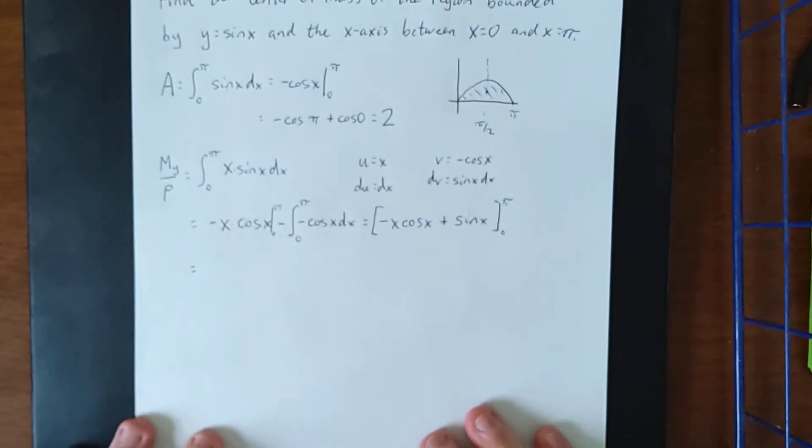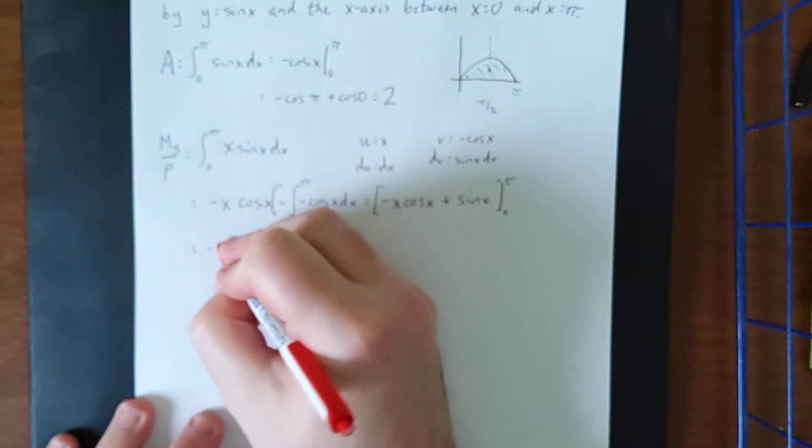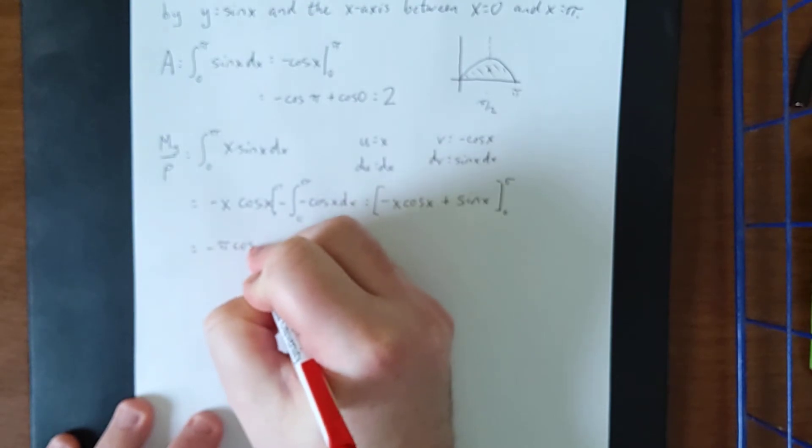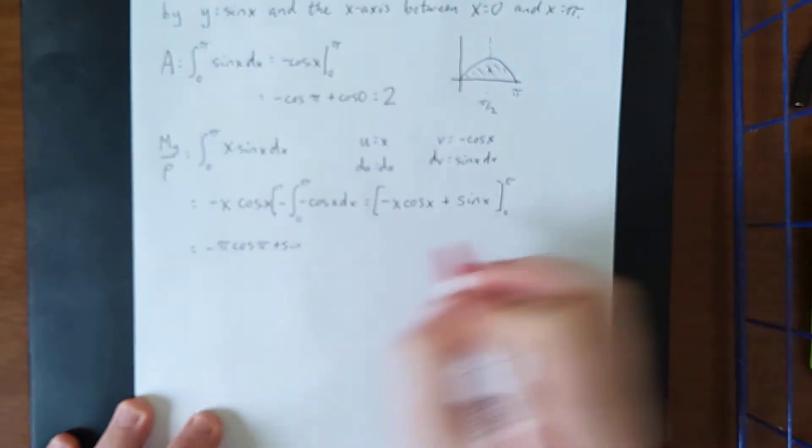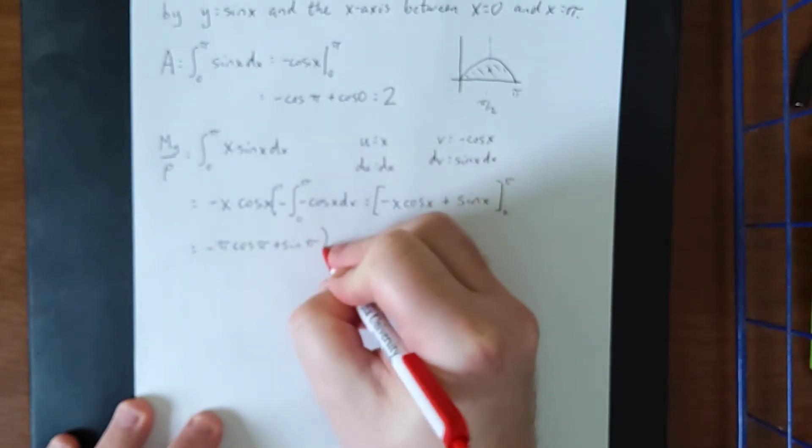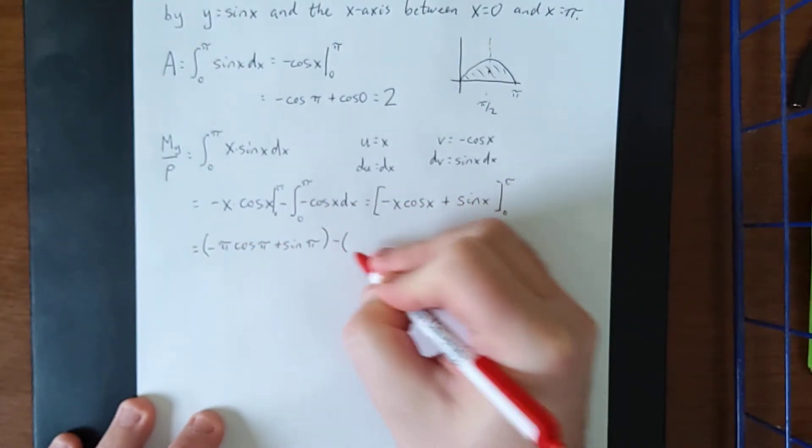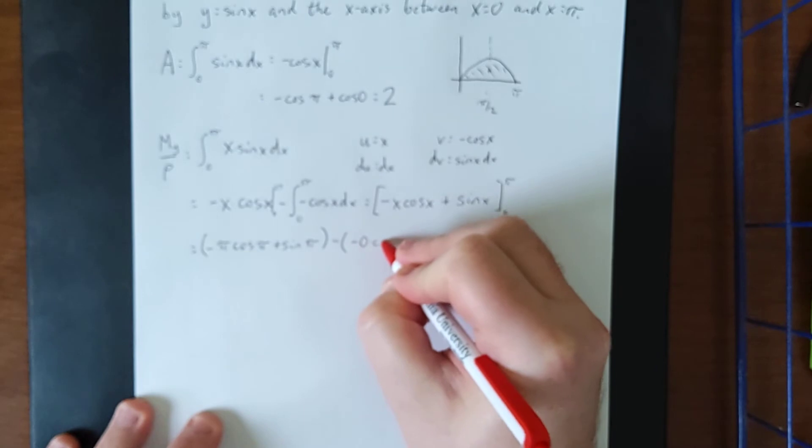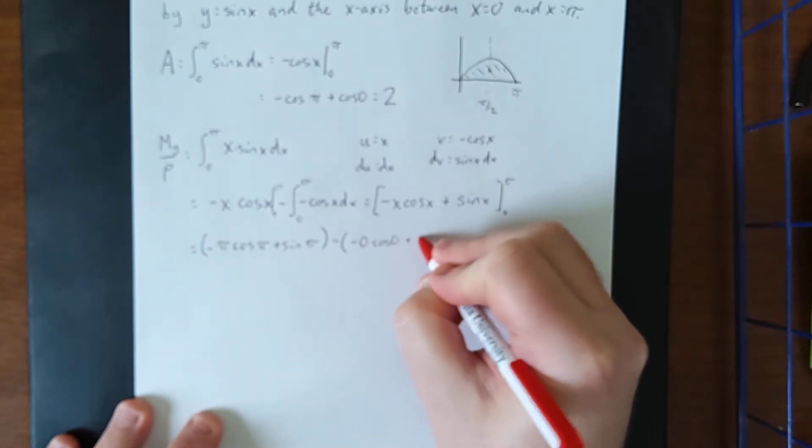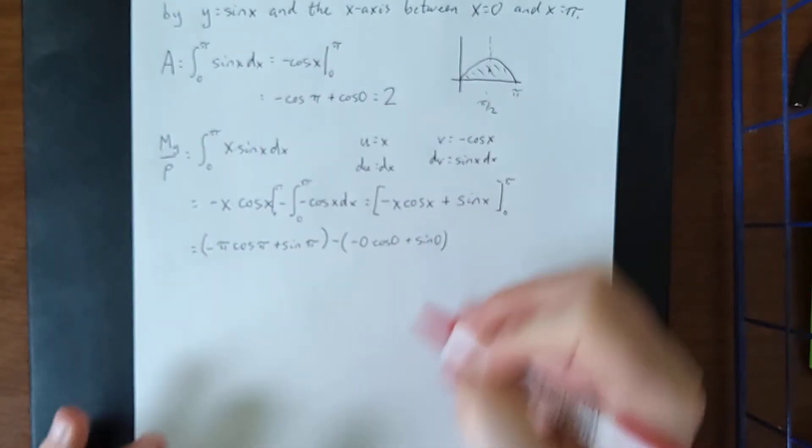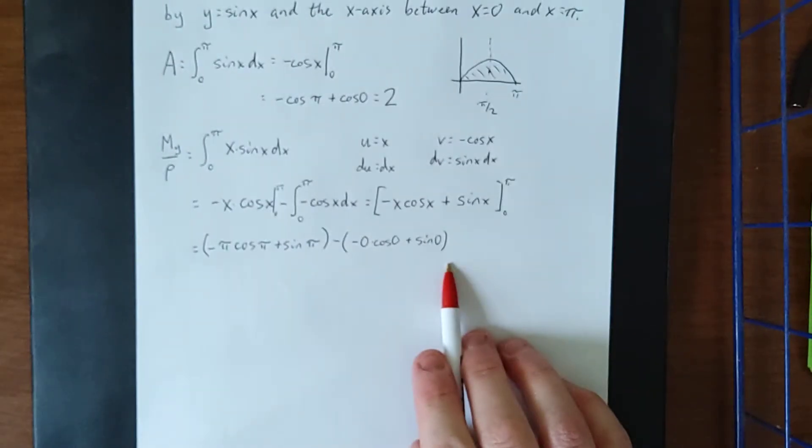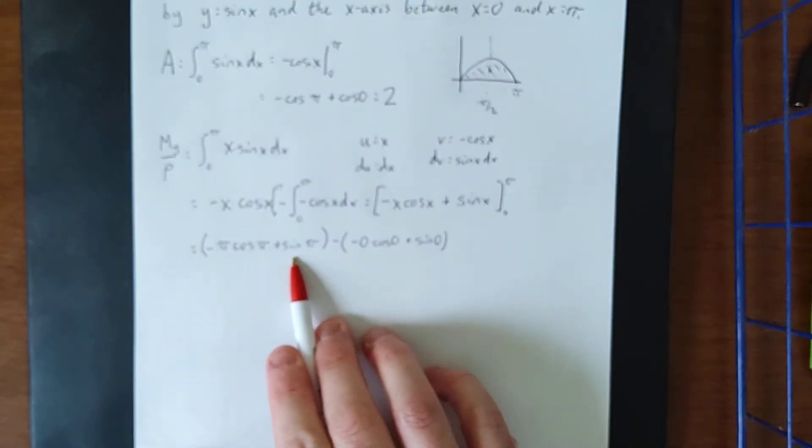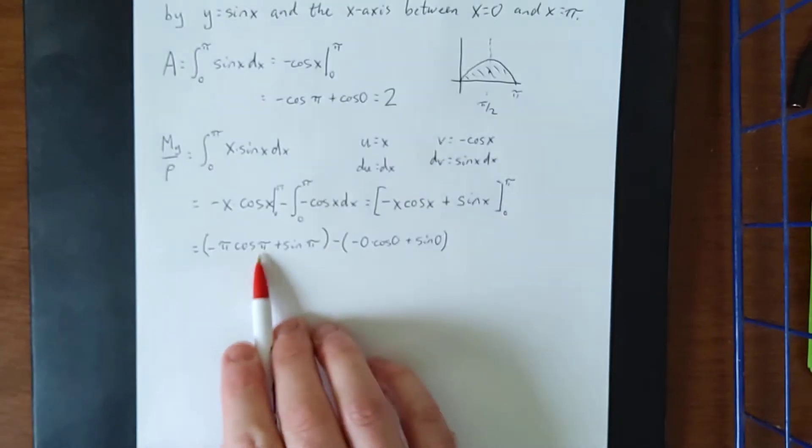Plugging in these bounds, we will get negative pi times the cosine of pi plus the sine of pi. And we will be subtracting the negative zero times the cosine of zero plus the sine of zero. So good news is this term is zero, this term is zero, and this term is zero, leaving us with just negative pi times the cosine of pi.